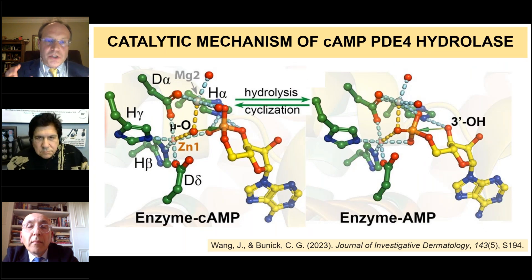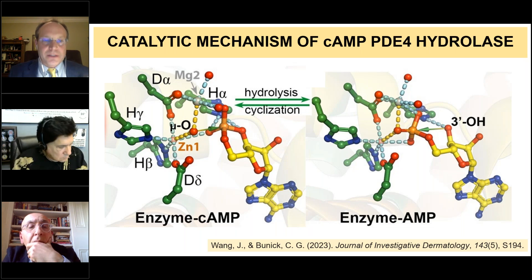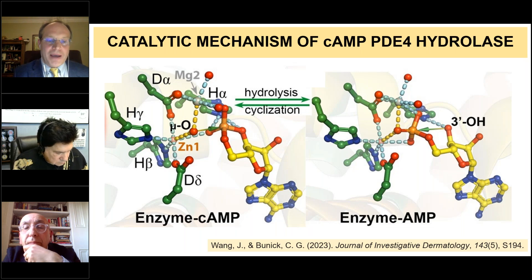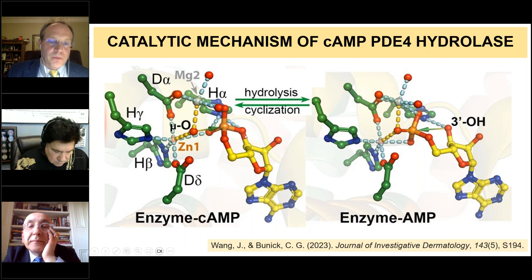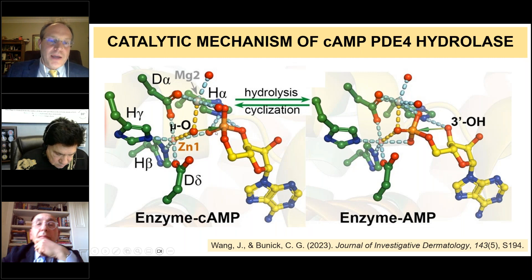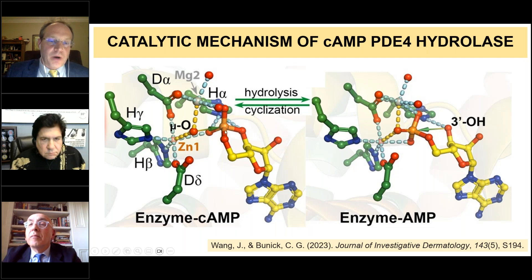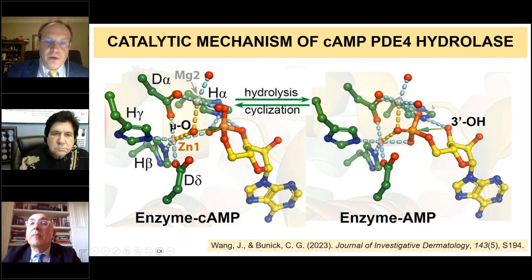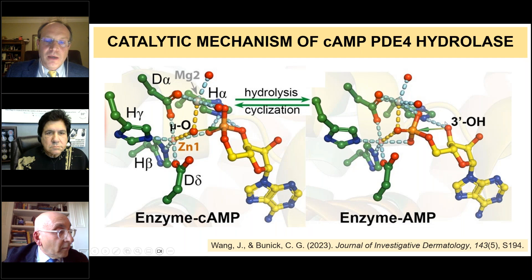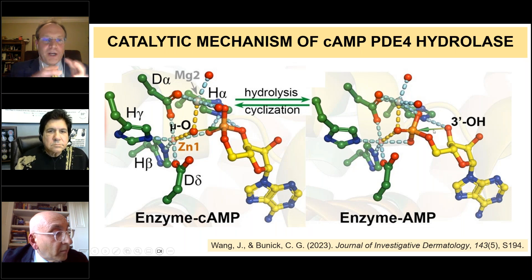The catalytic mechanism: PDE4 bound to cyclic AMP shows how at the metal ion site, it helps drive hydrolysis of the cyclic part of cyclic AMP, opening the ring. Here's the enzyme AMP, and the reverse cyclization happens through adenylate cyclase. So you have ring open as AMP and ring closed as cyclic AMP. Let's take a closer look at the chemical structures of cyclic AMP and our PDE4 inhibitors in dermatology.